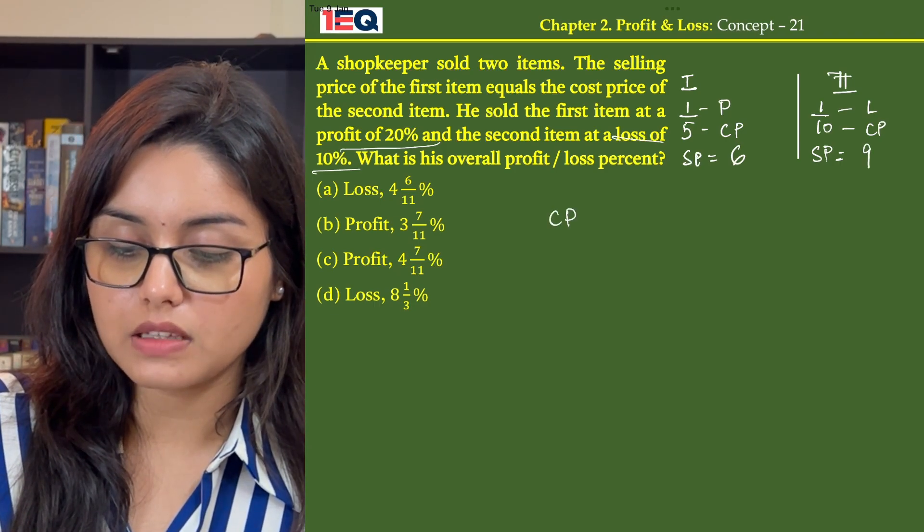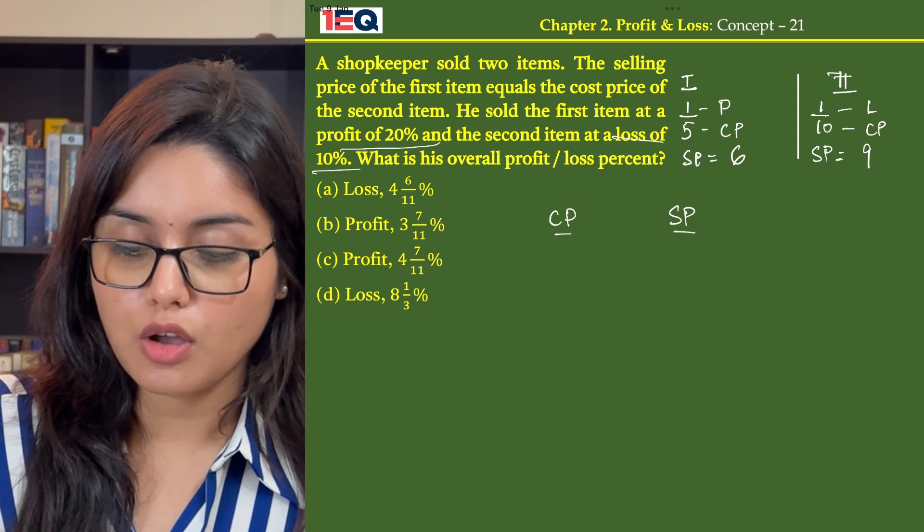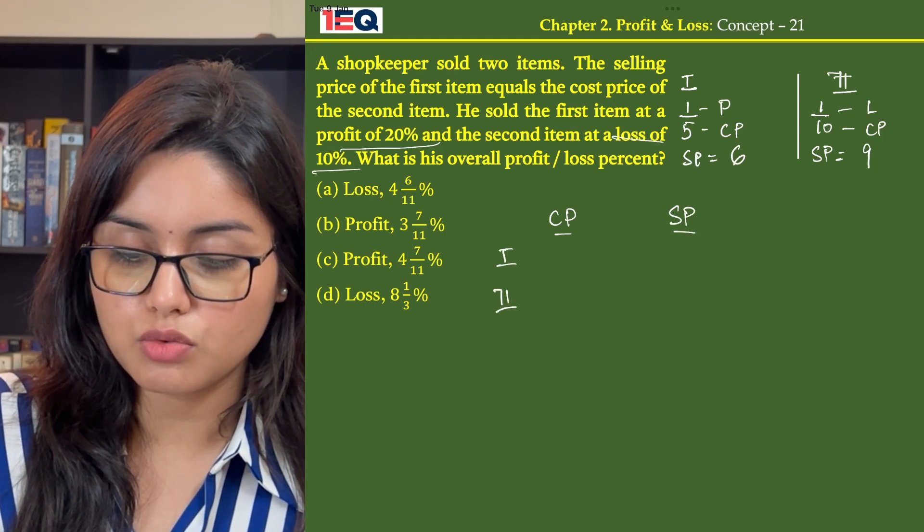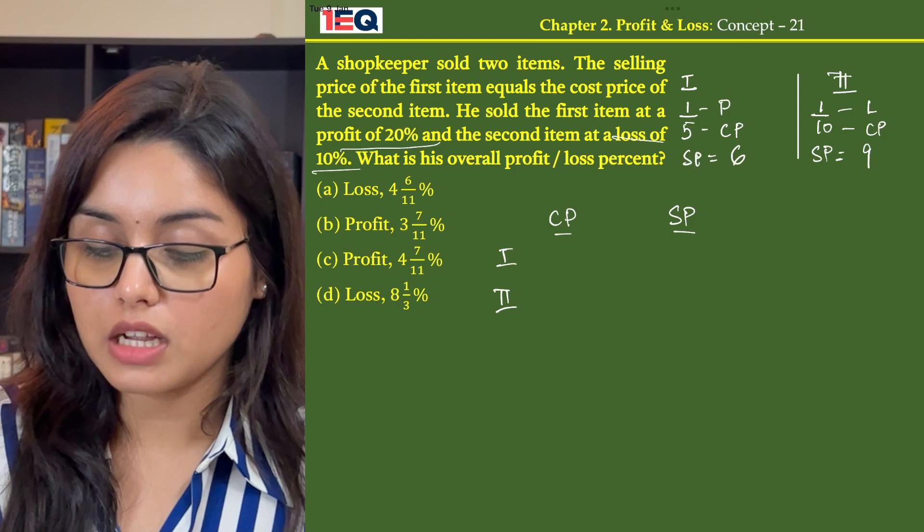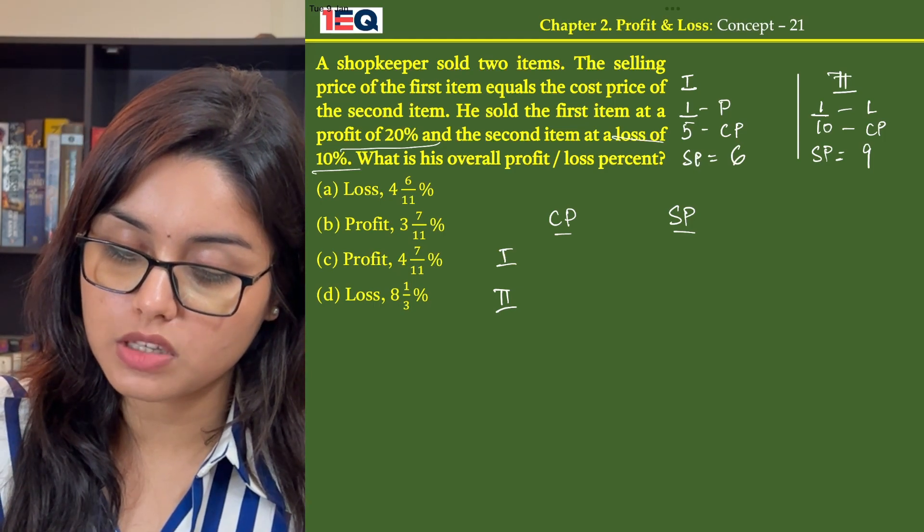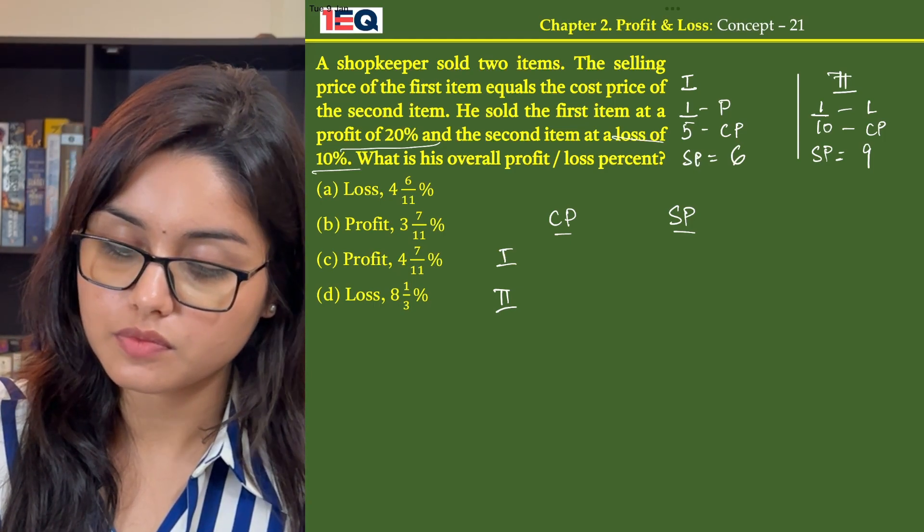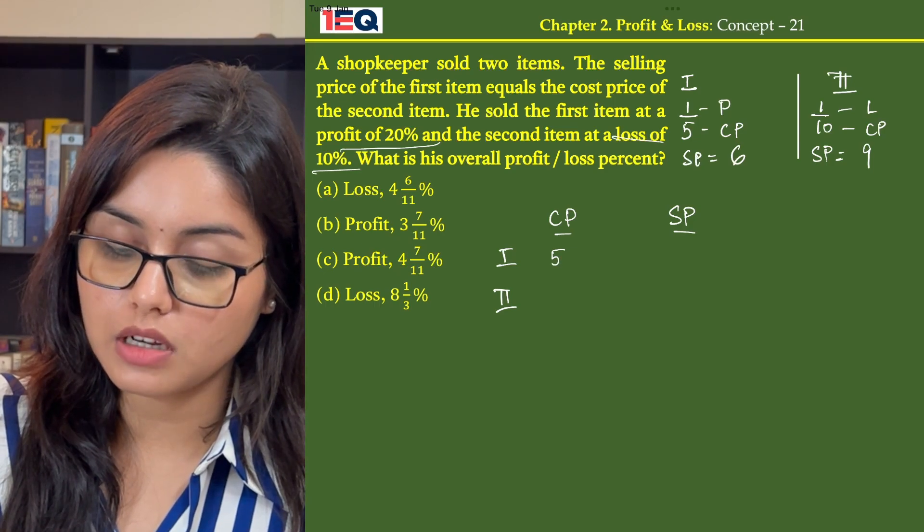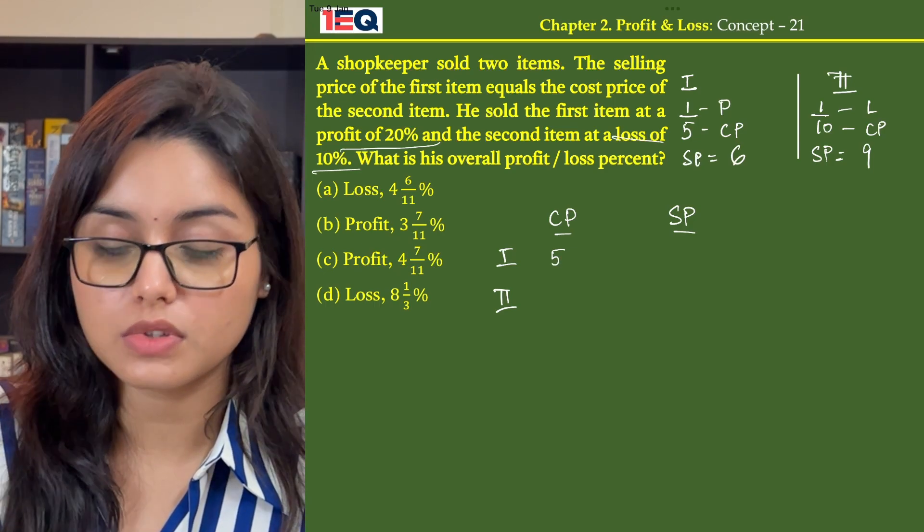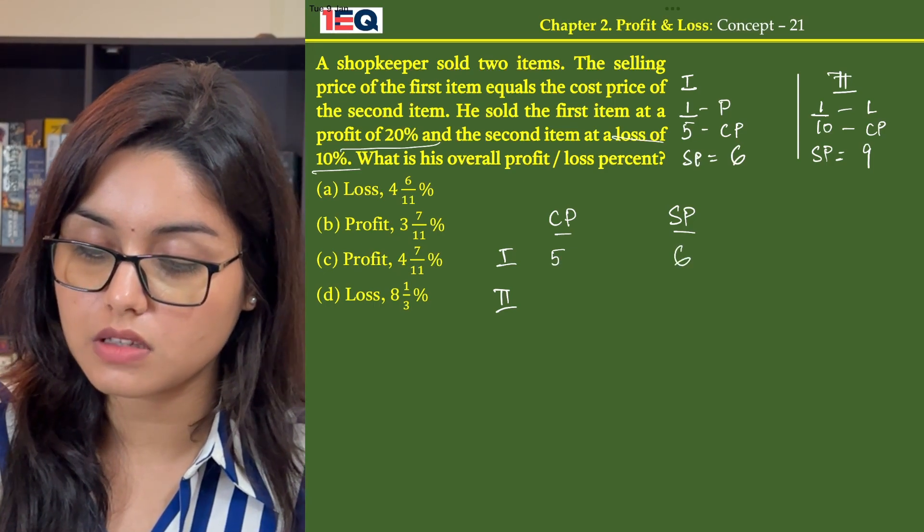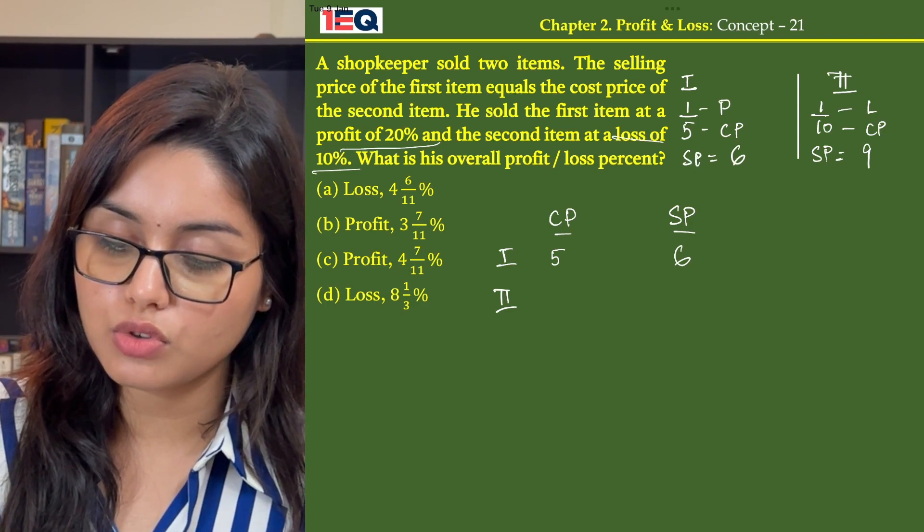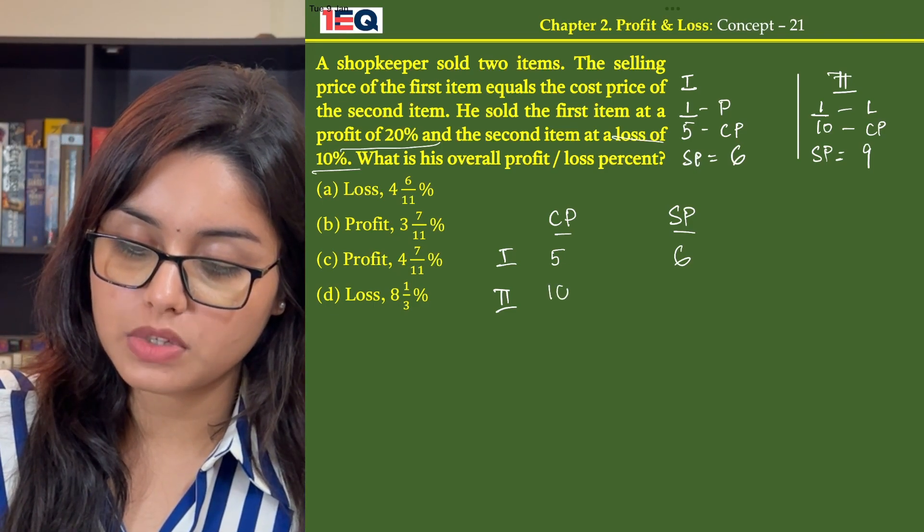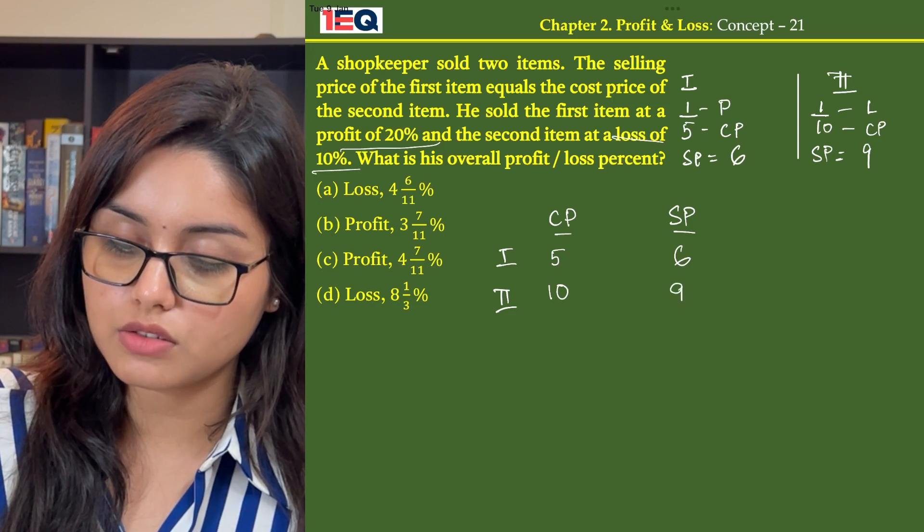So the cost price and selling price of item 1 and 2 are: item 1, the cost price is rupees 5 and the selling price is rupees 6. In item 2, the cost price is rupees 10 and the selling price is rupees 9.